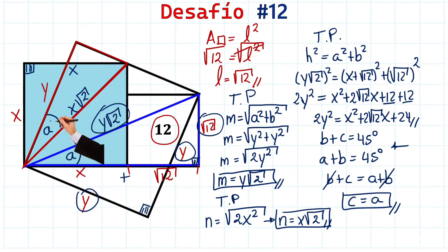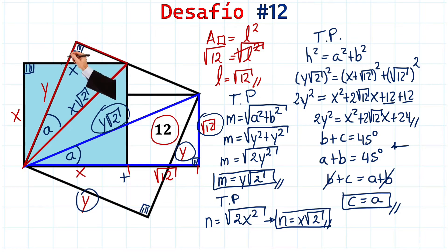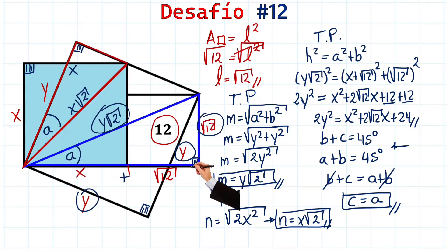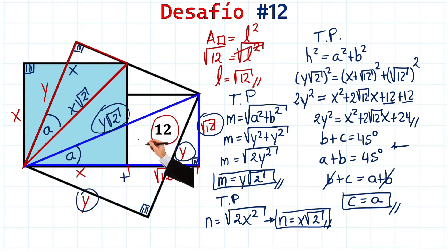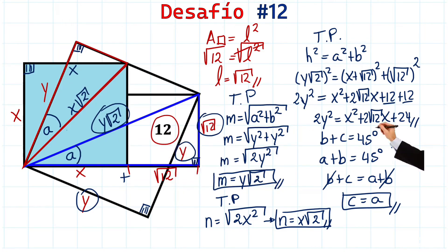These two angles are equal. We know there's a 90-degree angle here because it's the angle of the large square. In this red triangle, we have a 90-degree angle and angle A. And in the blue triangle, we also have a 90-degree angle and angle A. Therefore, these two triangles, since they have two equal angles, are similar triangles, and we can relate their sides.